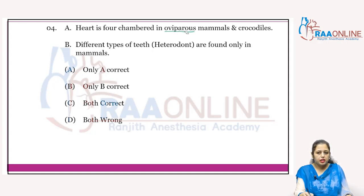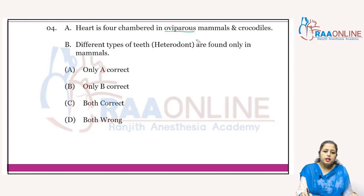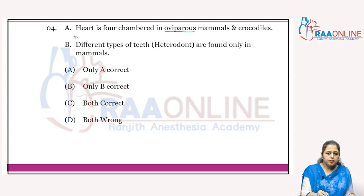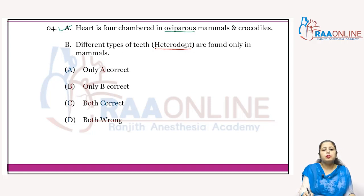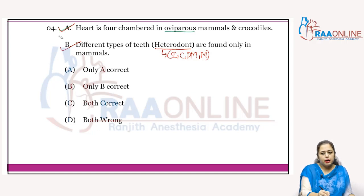Oviparous animals are egg-laying. The statement about four-chambered hearts in oviparous mammals and crocodiles is correct. Next: heterodont dentition means animals have different types of teeth with different structure and function — for example, incisor, canine, premolar, and molar. Heterodont dentition is found only in mammals, so that statement is correct.